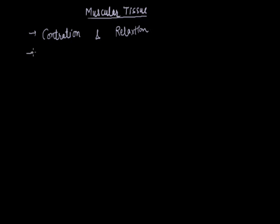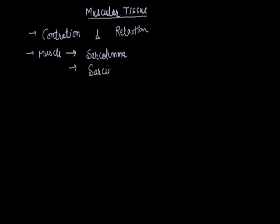The term related with muscle uses the prefix 'sarco'. The plasma membrane of muscle is called the sarcolemma, the protoplasm of muscle is called sarcoplasm, and various cell organelles like the endoplasmic reticulum of the muscle cell is called the sarcoplasmic reticulum.